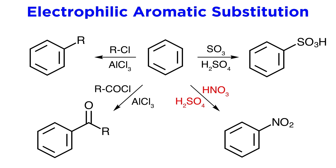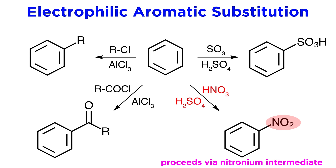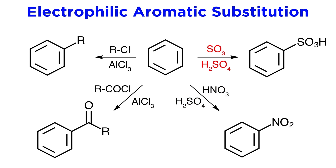Here are the reaction conditions associated with these transformations. For nitration, we are using nitric acid and sulfuric acid, and that results in the introduction of a nitro group, proceeding by a nitronium ion intermediate, which is what will act as the electrophile. For sulfonation, we are using sulfur trioxide and sulfuric acid, and it is the protonated version of sulfur trioxide that will act as the electrophile, resulting in the introduction of a sulfonyl group. While there are subtle differences to each of these reactions and their conditions, they all operate by the same basic mechanism.